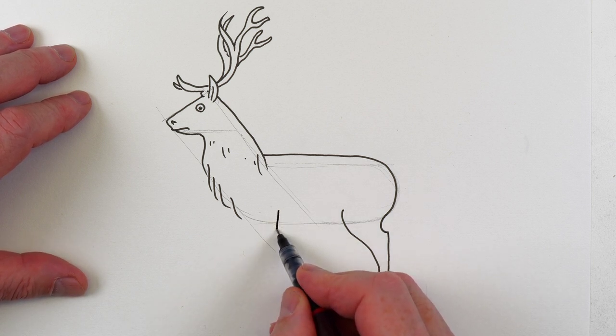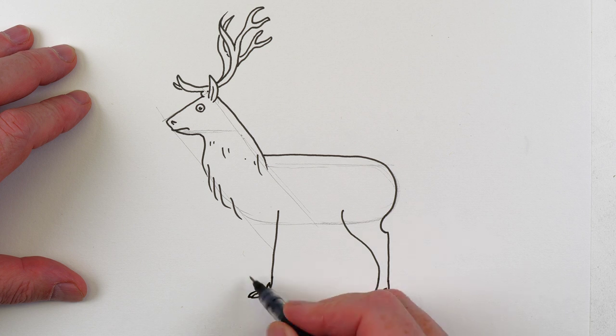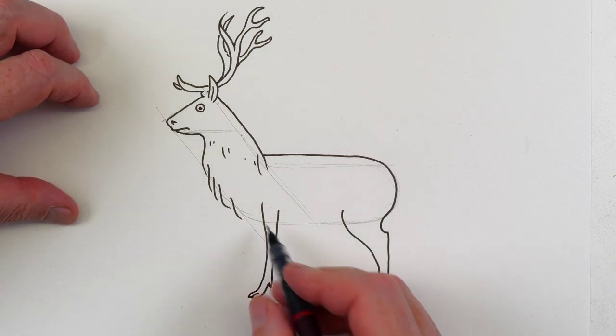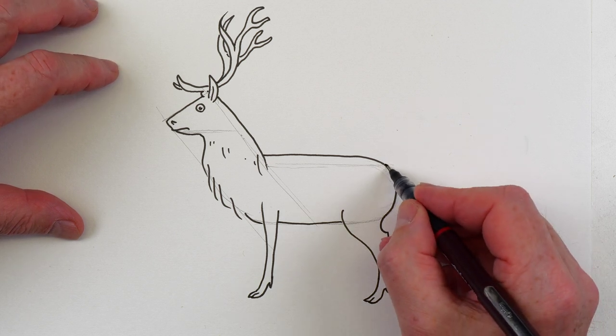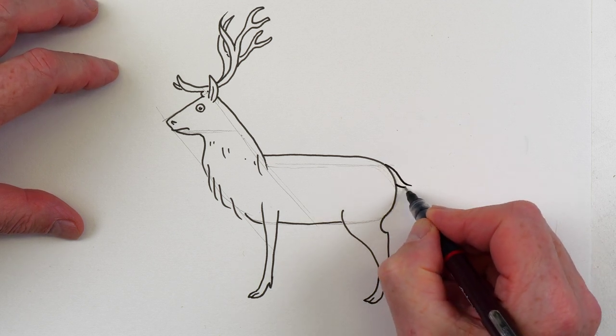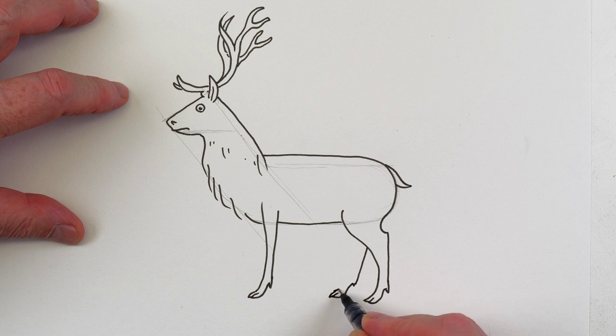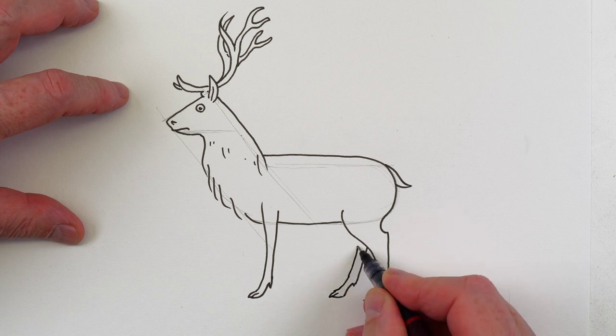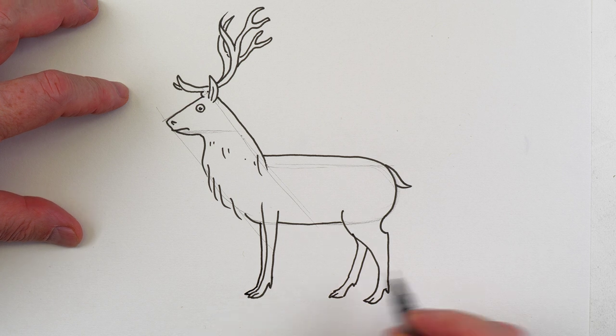And then here we want this to come slightly forward down to the same level up a little bit. And then like that. And then we can take that up to there. And we can now finish off the tummy there. And we can have a little tail and another foot there with these cloven hooves that's going to come up to about there and then up. And you're going to want another one down about there.